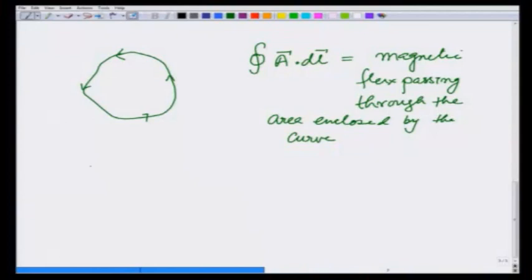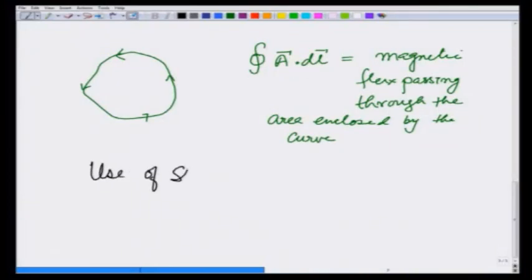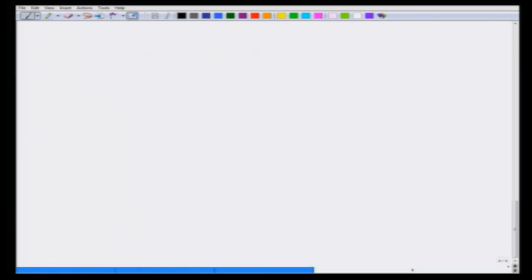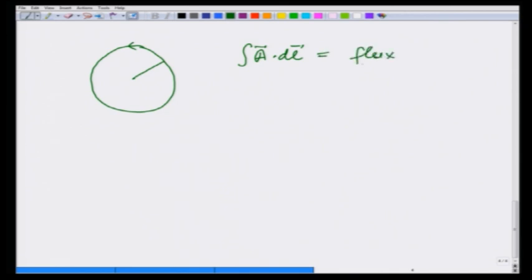We will of course be making use of Stokes' theorem later in calculating other quantities, but here we want to focus strictly on using it to calculate the vector potential. Given a situation, we take a path — if it depends only on the cylindrical coordinate s, we take a circular path — then calculate A dot dL and equate it to the flux passing through the area covered by that path, giving us the vector potential.